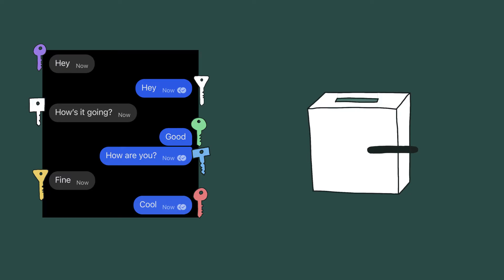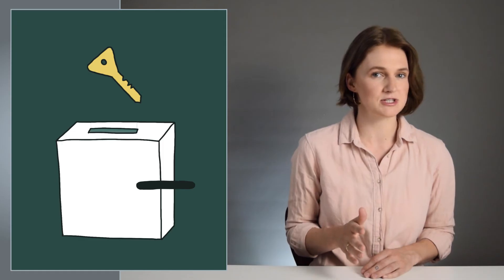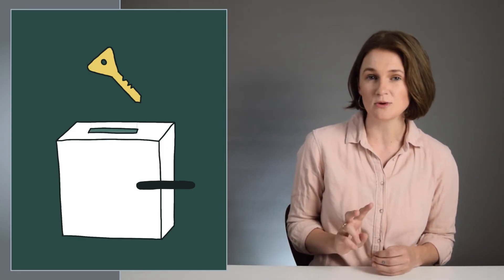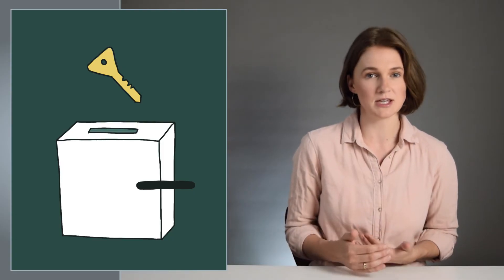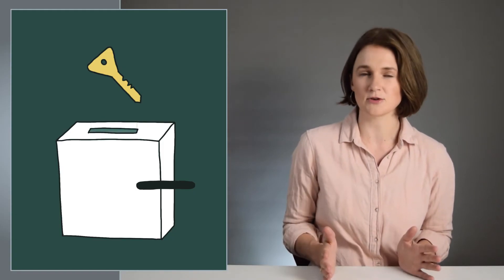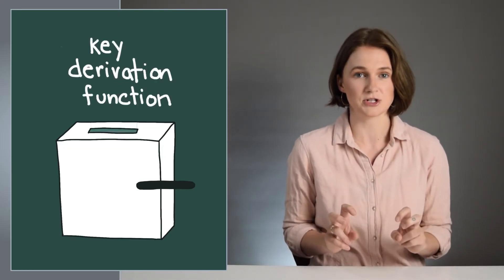Importantly, each key should be sufficiently different from the other keys, so that an attacker who has discovered one key doesn't easily have access to the rest. For example, remembering that keys are just numbers, a very bad machine would be one that simply adds two each time it produces a new key. If someone discovered one of the keys, then they could easily discover the rest.